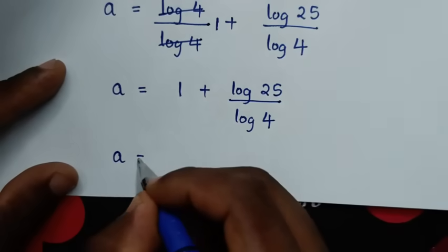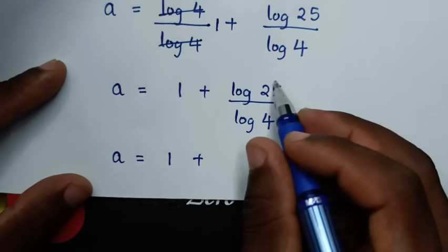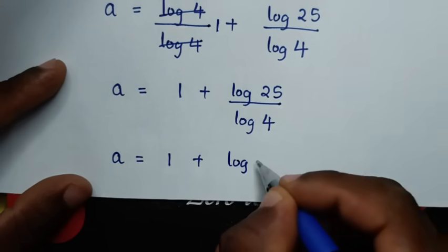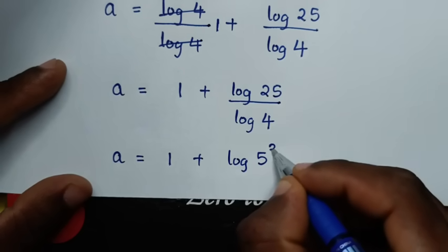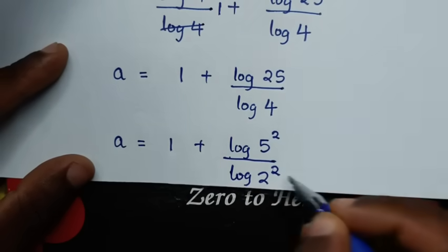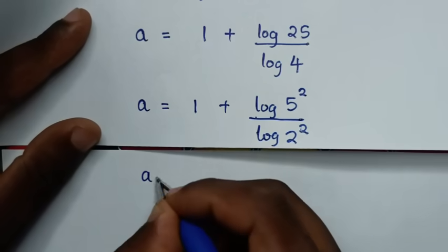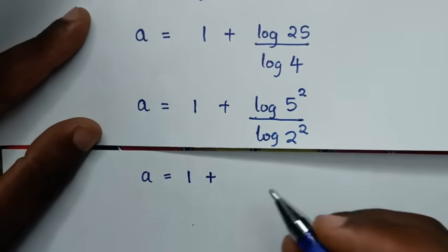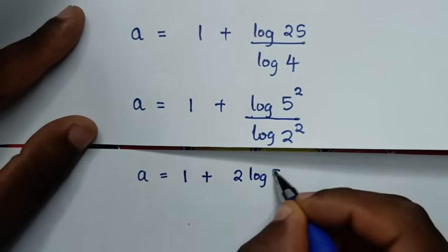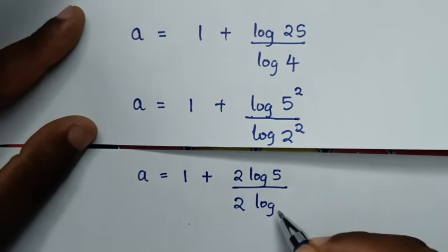In the next step, a is equal to 1 plus log of 25 over log of 4. Now 25 is the same as 5 squared, and 4 is the same as 2 squared. So we have log of 5 squared over log of 2 squared. The power of 2 moves to the front in each term, giving 2 log of 5 over 2 log of 2.